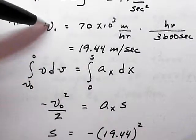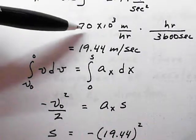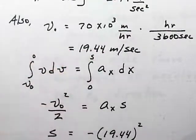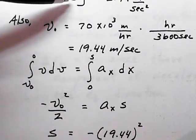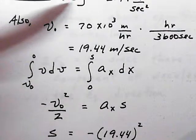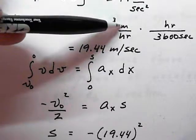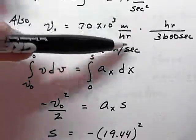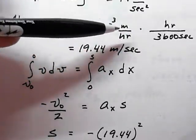We'll convert our velocity from 70 kilometers per hour into meters per second of 19.44.